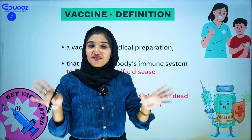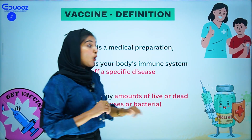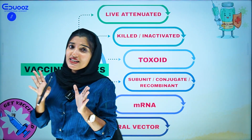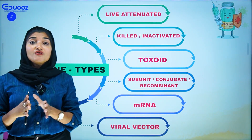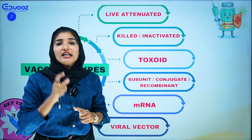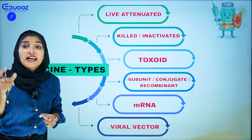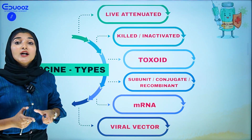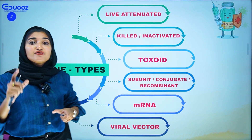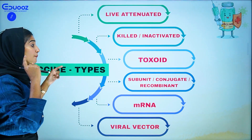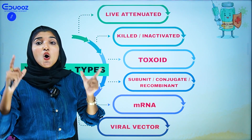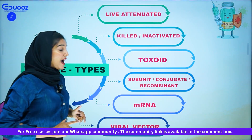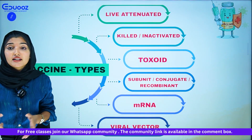What are the six types of vaccines? The first one is a live attenuated vaccine. The second is a killed or inactivated vaccine. The third is a toxoid vaccine. The fourth is a subunit, conjugate, or recombinant vaccine. The fifth is an mRNA vaccine, and the sixth is a viral vector vaccine.